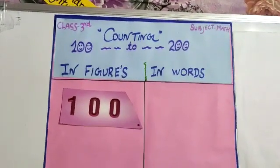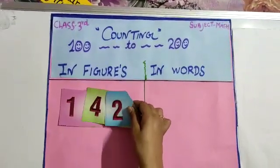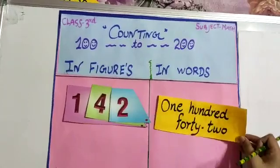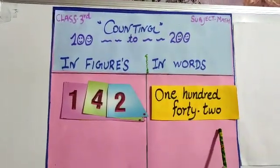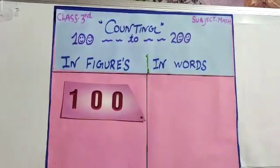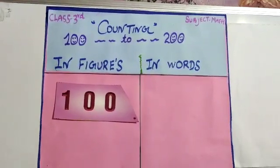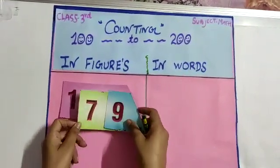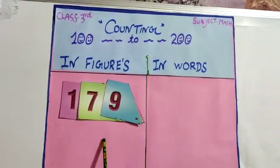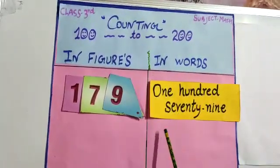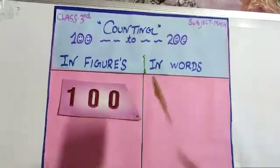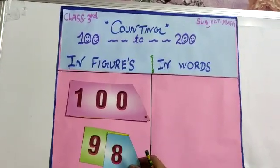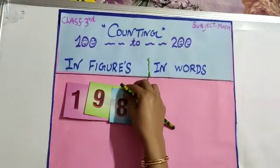Next number is 142. 142 in words: one hundred and forty-two. Students, look at these numbers very carefully and learn how to read them. The next number is 179. 179 in words: one hundred and seventy-nine.